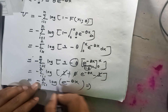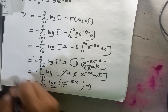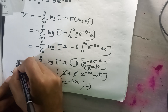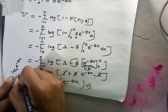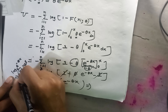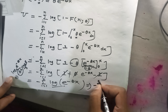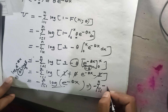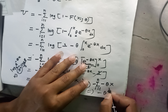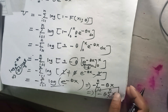From here, we know that log of e to the power something equals that something times log e, and log e base e is one. So log of e to the power minus theta x equals minus theta x. Therefore, U equals minus summation from i equals 1 to n of minus theta x_i, which simplifies to minus theta times the sum from i equals 1 to n of x_i.